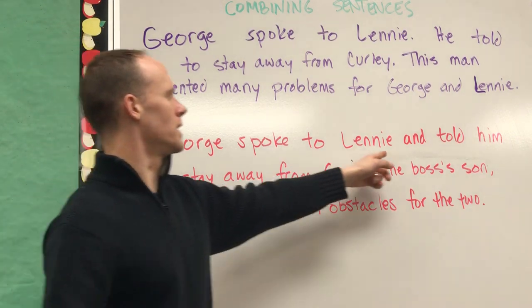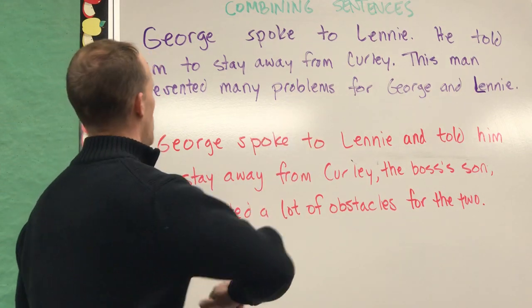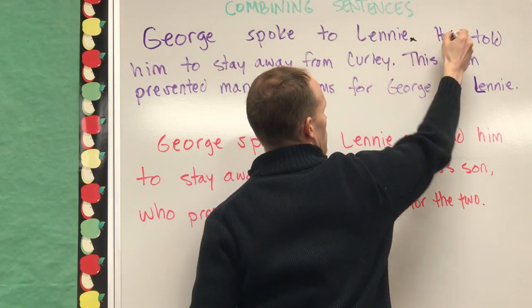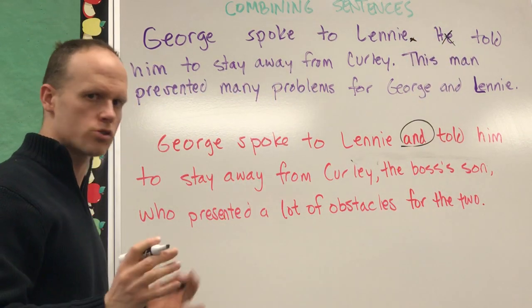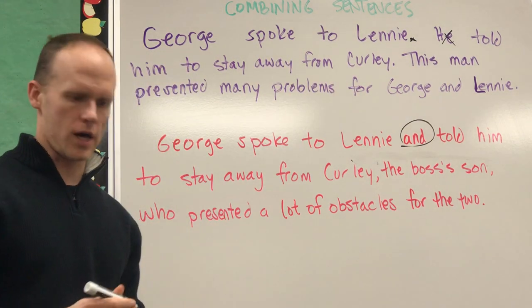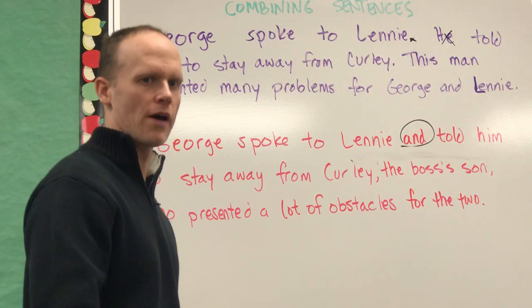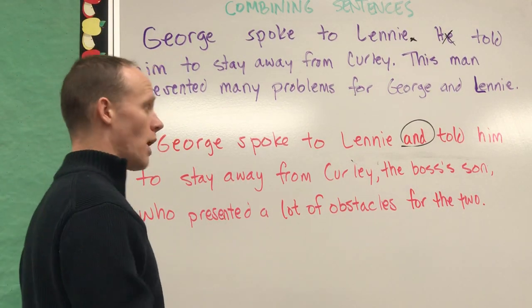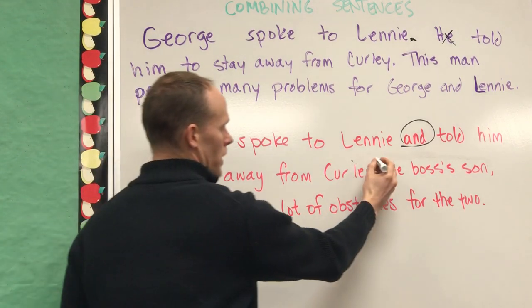'George spoke to Lenny and told him to stay away from Curly.' All I did was get rid of the period, get rid of the word 'he,' and put in a conjunction. That's all we did. So now instead of having two separate subject-verb sentences, we have a more complex sentence. That's better.